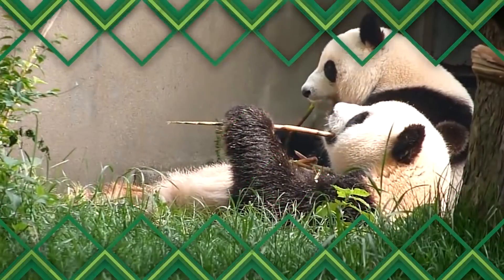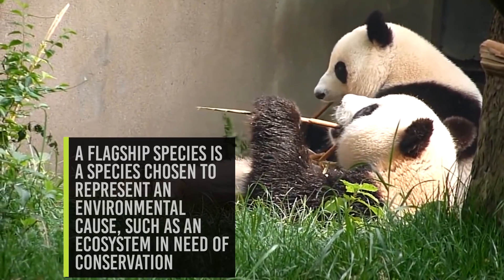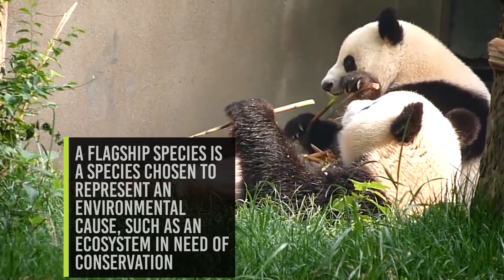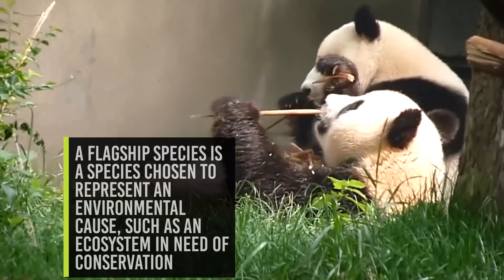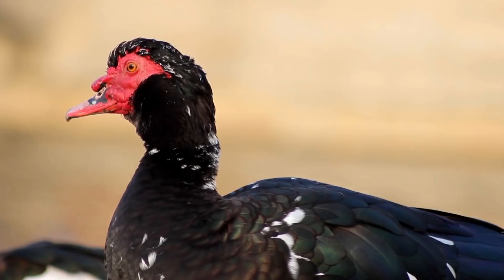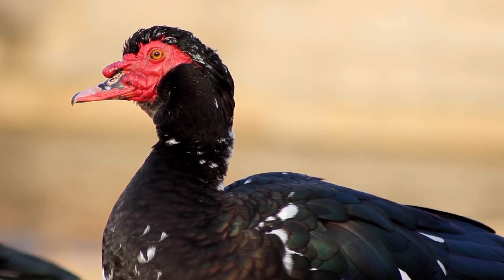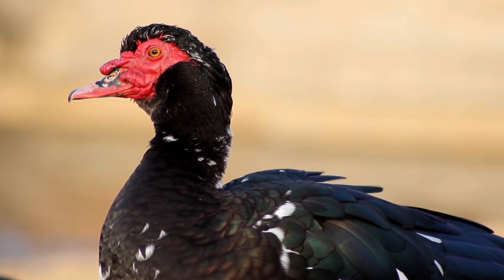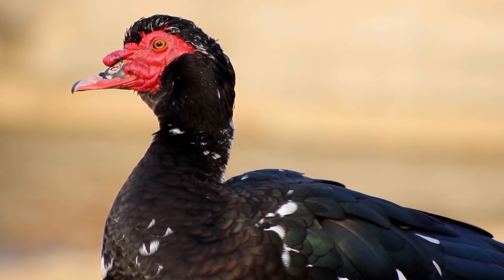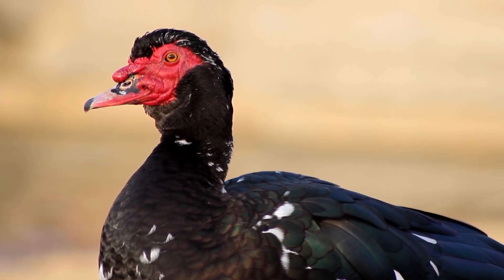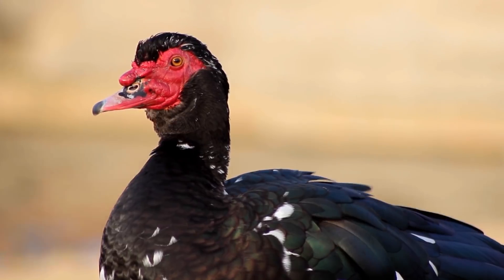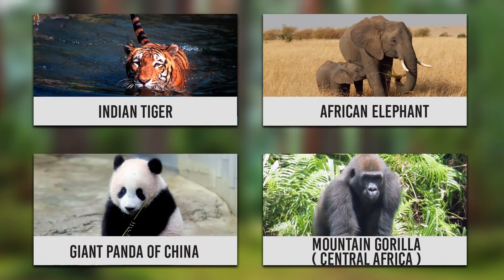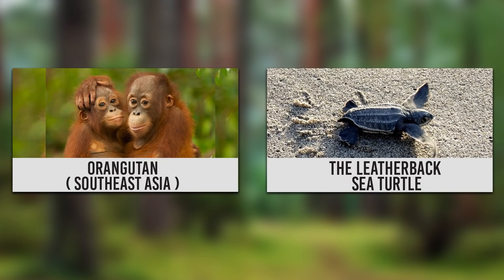A flagship species is a species chosen to represent an environmental cause such as an ecosystem in need of conservation. These species are chosen for their vulnerability, attractiveness or distinctiveness in order to get support and acknowledgement from the public at large. A few examples are the Indian tiger, African elephant, giant panda of China, mountain gorilla of central Africa, orangutan of Southeast Asia and the leatherback sea turtle.